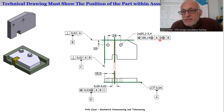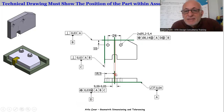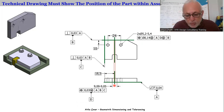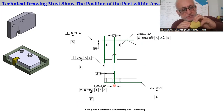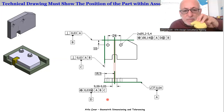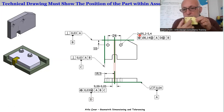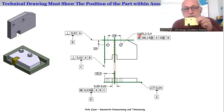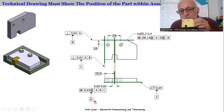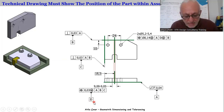There is a new datum here: datum D. Datum D is the axis plane of the keyway, because the keyway is manufactured before the holes. So when manufacturing the holes, we already have a keyway with an actual axis plane, and that axis plane is datum D. We use datum D here because the symmetry of the holes according to datum D is very important for the assembly. So after datums A, B, and C, we generate a new datum D.